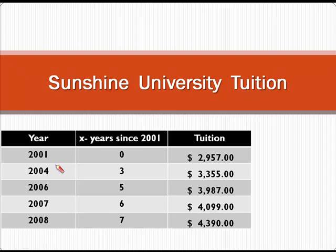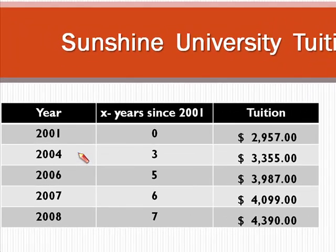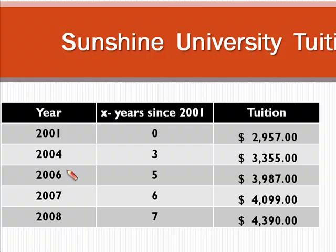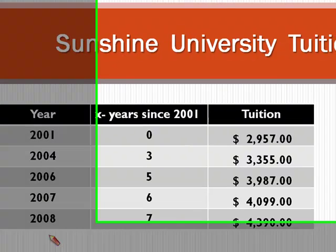If you look at our original data table, you'll notice 2005 is missing and 2010 is missing. However, by using the regression equation, we should be able to estimate a value for 2005 and 2010.